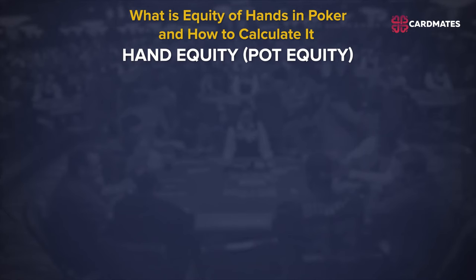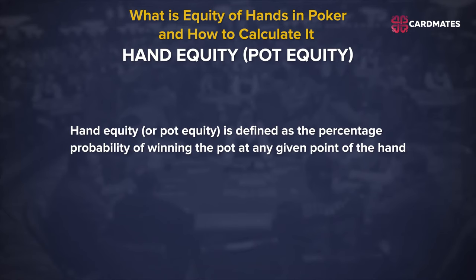Hand equity, or pot equity, is defined as the percentage probability of winning the pot at any given point of the hand. This is what you theoretically own on the basis of your cards at any given moment — your probability of success.